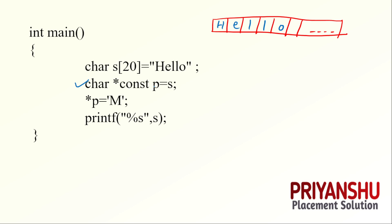A constant character pointer P is set equal to S. Keep in mind, whenever you see this, P will point to the starting value of the array — this is the same in both integer and character arrays. So P is pointing to the 0th index, and indices go from 0 to 19 because the length is 20.